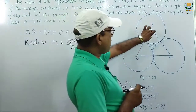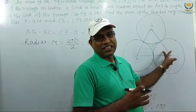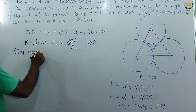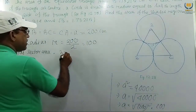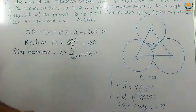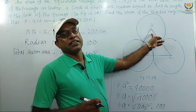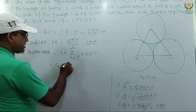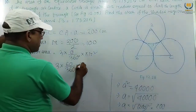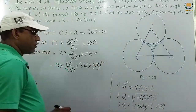We have three sectors — one at each vertex. Total sector area = 3 × (θ/360°) × π × R². Here θ = 60° (equilateral triangle), π = 3.14, and R = 100. So total sector area = 3 × (60/360) × 3.14 × 100².